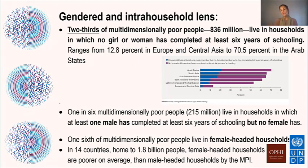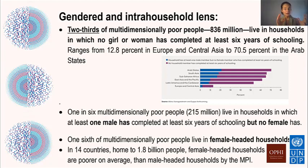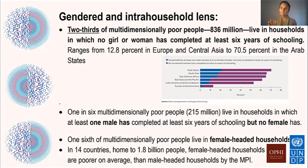One angle to investigate is gender. Of the 1.3 billion poor people, two-thirds live in a household in which there is an eligible woman or girl who has not completed six years of primary school. We've always talked about girls' and women's education and its strategic importance, but deficits remain. Furthermore, 215 million live in households where a boy or man has completed six years of schooling, but no woman — there is intra-household disparity on a daily basis.